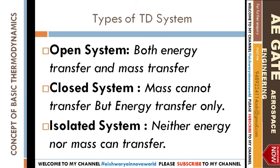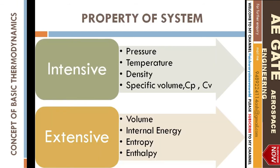An isolated system has a very good example: a thermoflask. A thermoflask is easy to understand — when you have a fever, you pour hot water into it and you can reuse it for another five hours to keep the hot water intact. So this is an example of an isolated system.